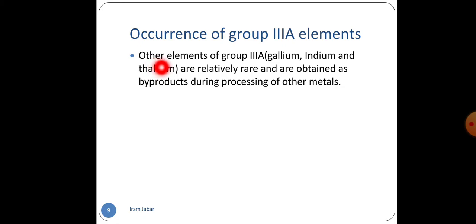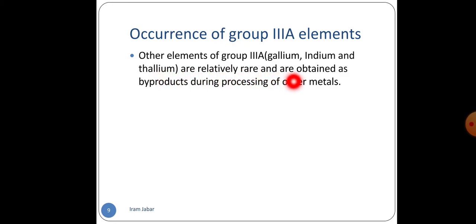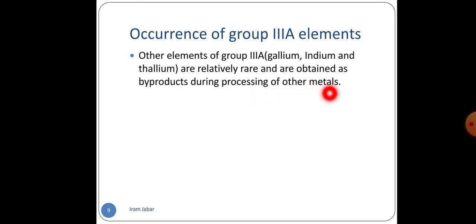The other elements of Group 3A — gallium, indium and thallium — are rare and are obtained as by-products during the processing of other metals.